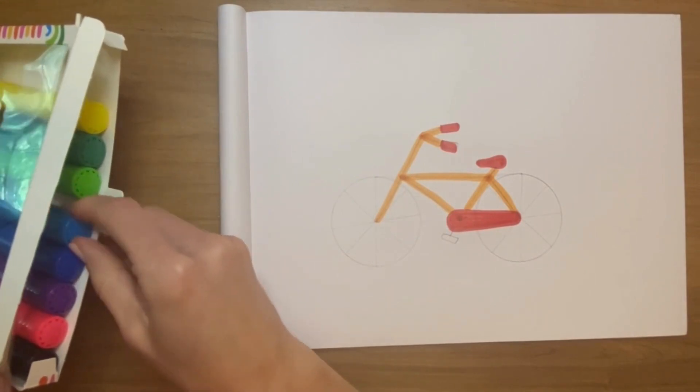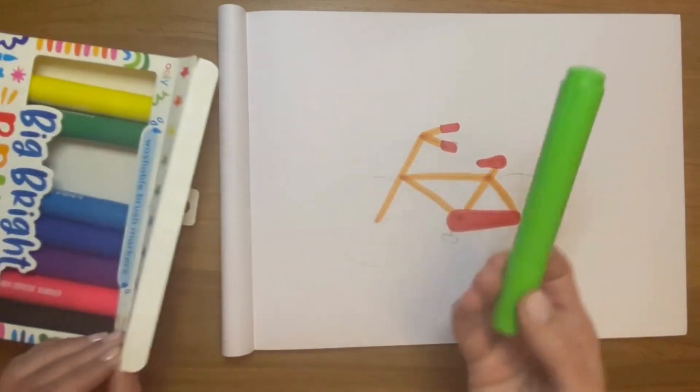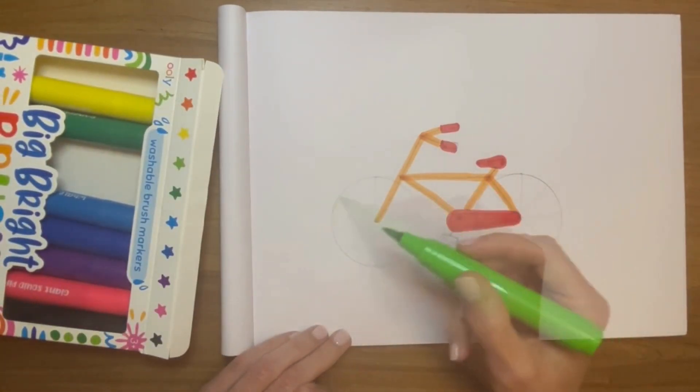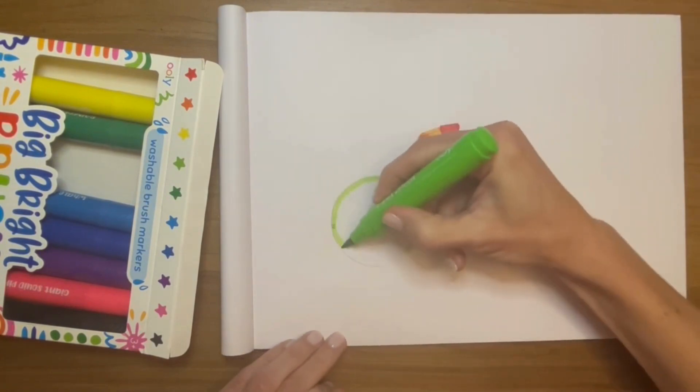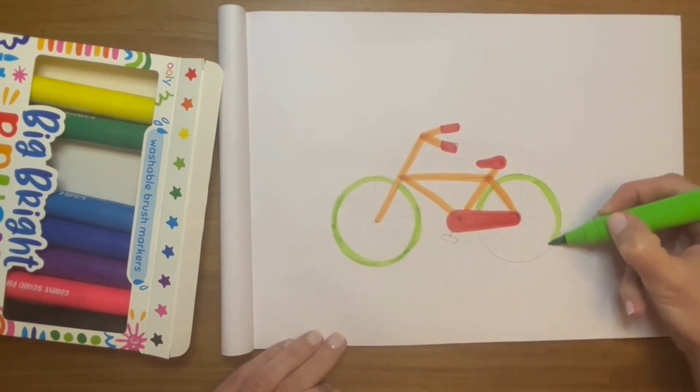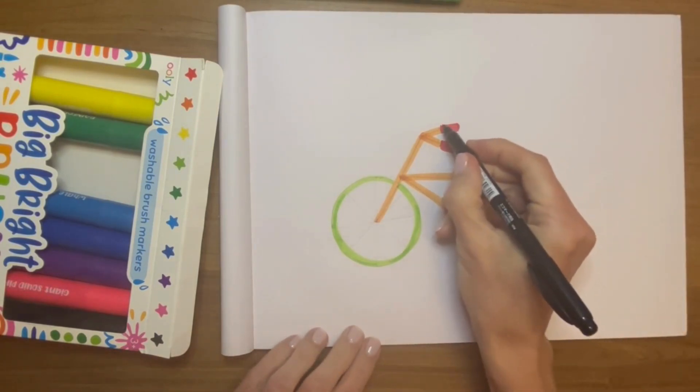Let's see, for the wheels—or should we make them a different color? I want them green. Why not? All right, so what do you think? Looks like a bike now, right? I'm going to just go ahead and outline it again.